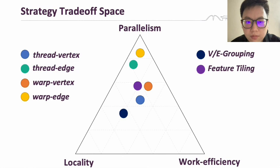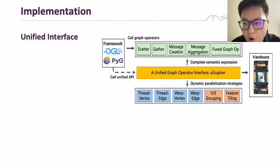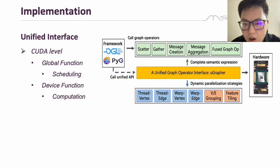Next, we introduce our implementation, where we use a unified abstraction to implement a unified interface. We first implement a unified interface at the CUDA level, which consists of two parts.